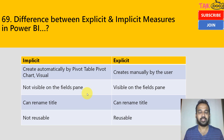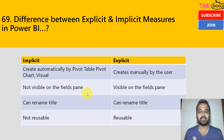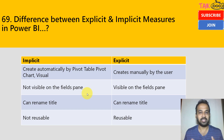For implicit measures, they are not reusable — they are specific only to the visual where they are used. But for explicit measures, we can reuse them in multiple places like tables, visuals, KPIs, cards, or anywhere else.